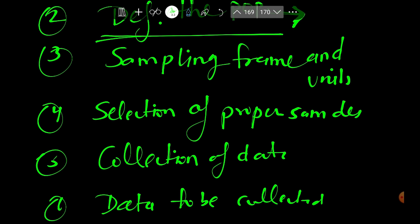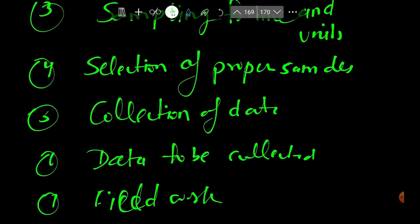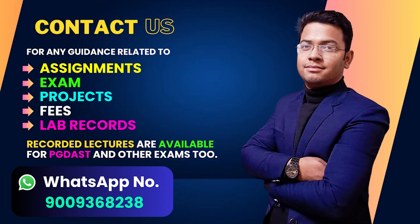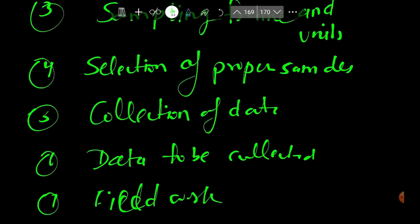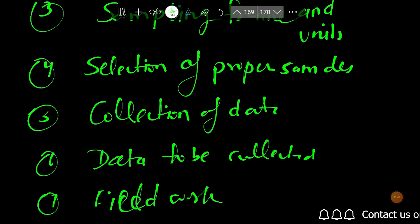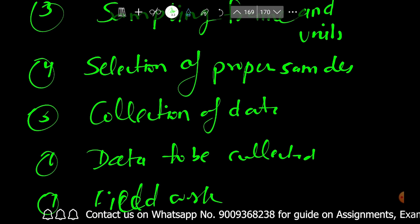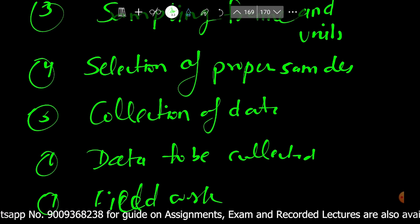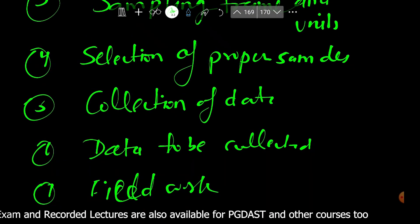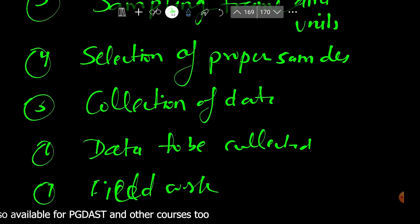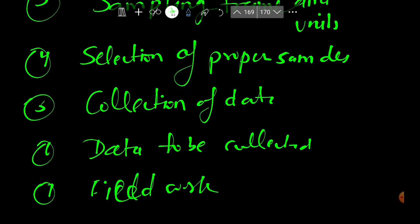The fourth step is the selection of a proper sampling design. Once we have the population data, we must select the appropriate sampling design to use. There are many sampling techniques available, and we must choose the one that will give proper and accurate results.